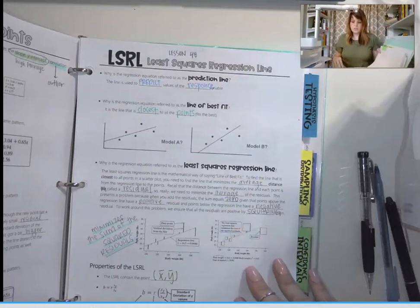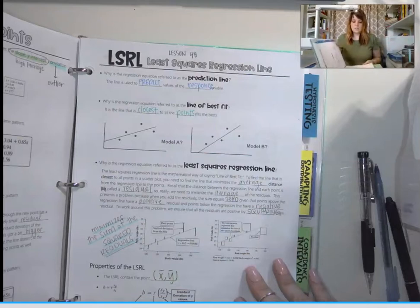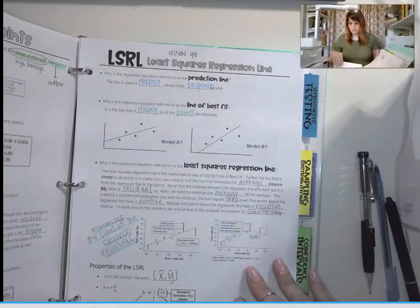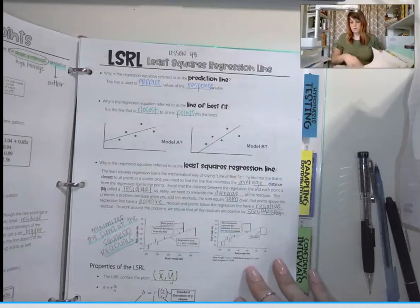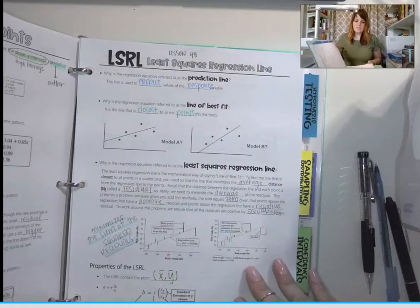Confidence intervals is Unit 6. What is a confidence interval is lesson 60. Lesson 61 is also headed confidence intervals. Lesson 62 is conditions for a proportion. Lesson 63 is the trouble with estimating a mean.